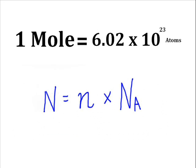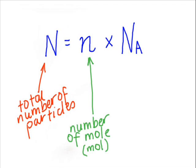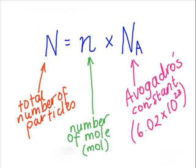So this is the formula that we're going to use. The first N, big N, stands for the total number of particles. Little N denotes the number of mole, and that's how you write it in short form. And NA stands for Avogadro's constant, or 6.02 times 10 to the 23.